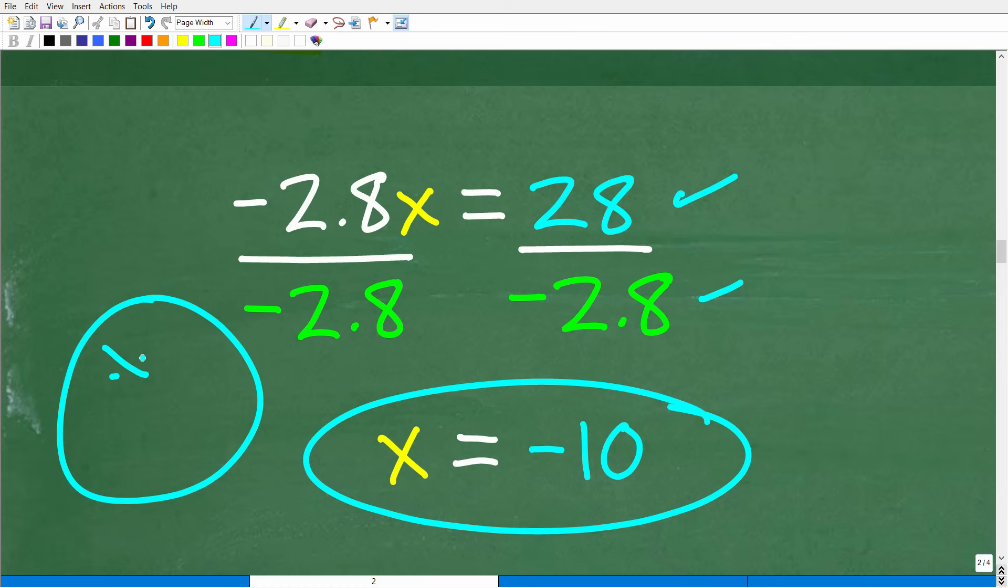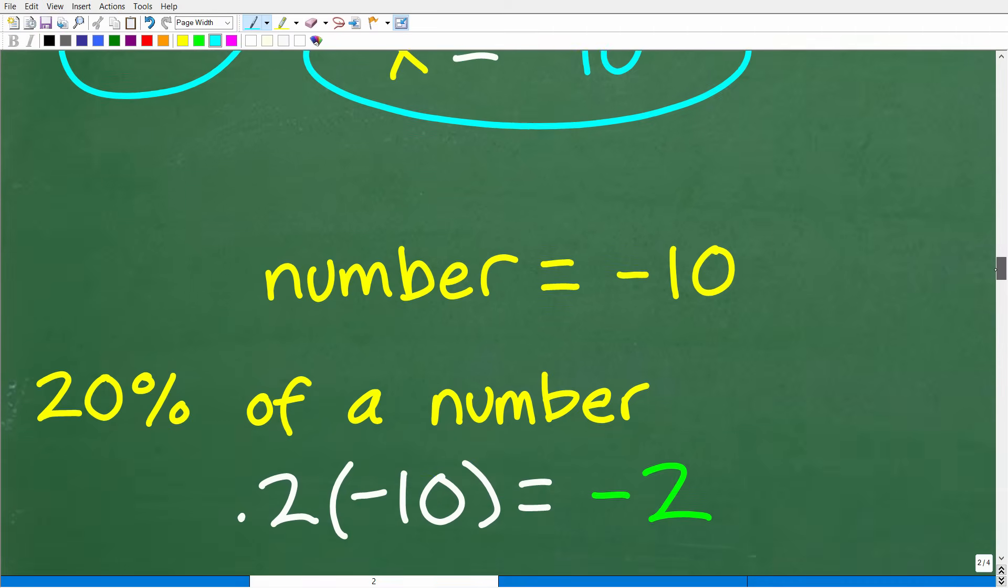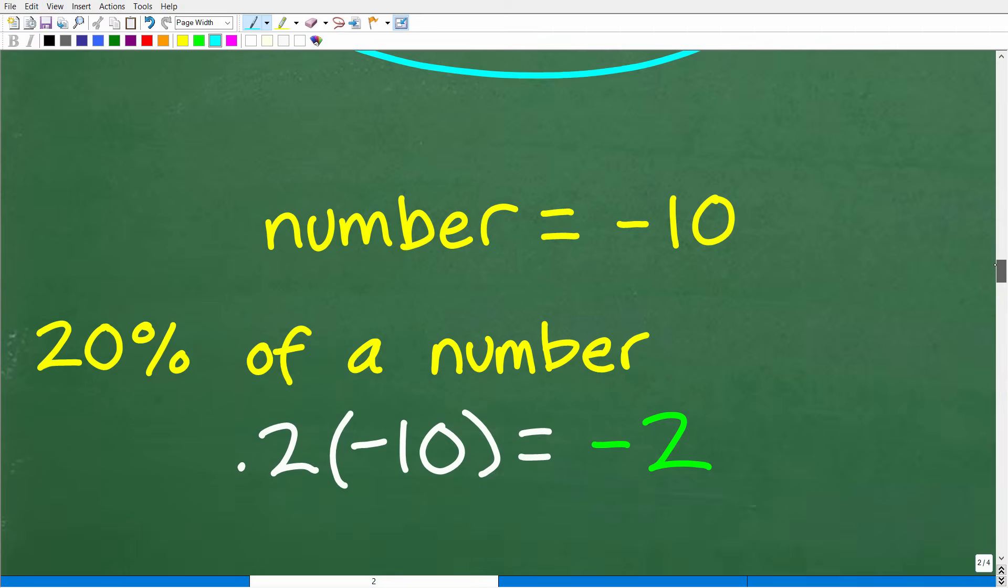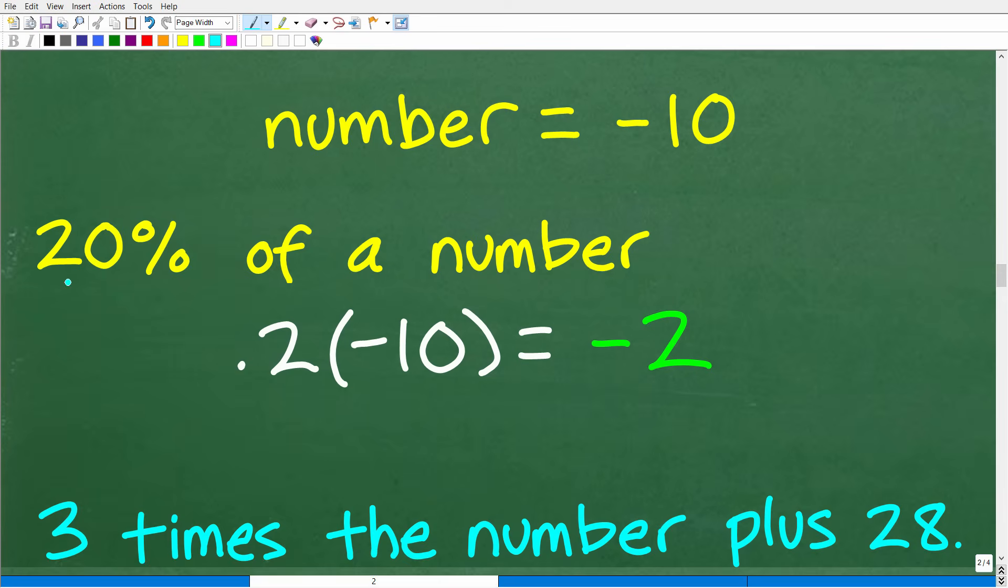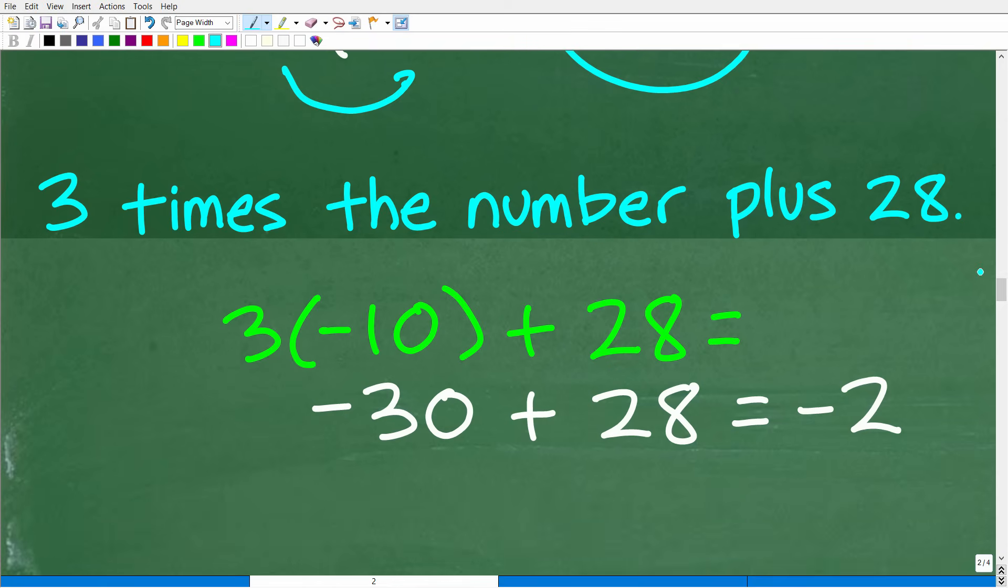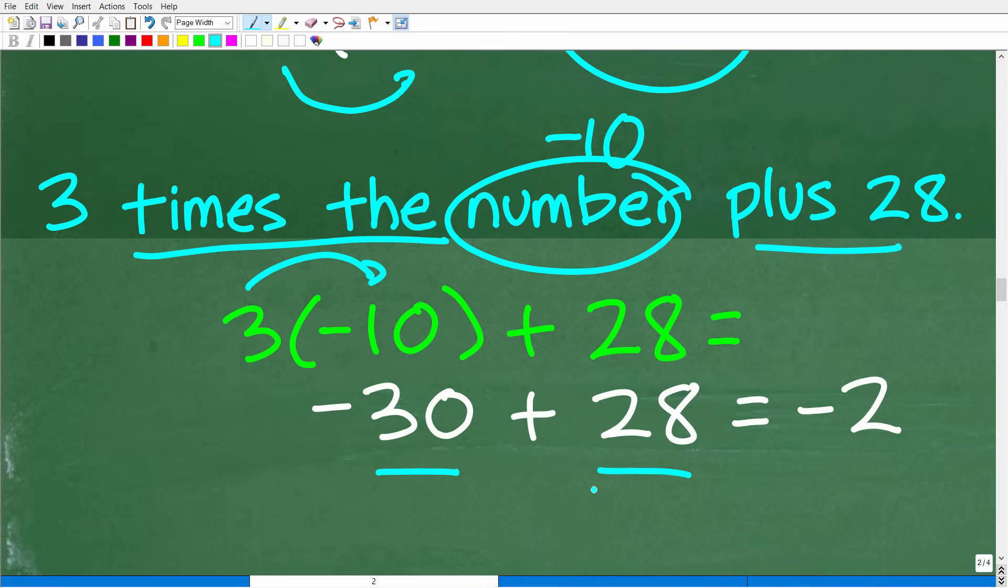Let's suppose we did all this and we're feeling pretty good about this answer, but maybe you're just not sure. How could we check this answer? Well, this is not that difficult. Let's go back. Our number, X, is negative 10. So this number is negative 10. Let's go back and check this translation. So 20% of our number, now we know the number is negative 10. 20% of negative 10 is going to be 0.2 times negative 10. 0.2 times negative 10 is negative 2. So let's see if that is equal to this part of the problem. 3 times the number plus 28. What is the number? The number now is negative 10. So 3 times the number would be 3 times negative 10. 3 times negative 10 is negative 30 plus 28. Negative 30 plus 28 is indeed negative 2. Look at this, everything worked out.